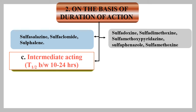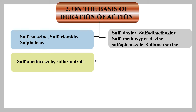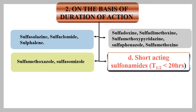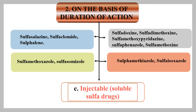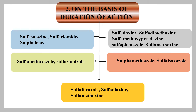Intermediate acting sulfonamides have a half-life between 10 to 24 hours; examples are sulfamethoxazole and sulfasomizole. Short acting sulfonamides have a half-life less than 20 hours; examples include sulfamethizole and sulfisoxazole. Injectable or soluble sulfonamides include sulfafurazole, sulfadiazine, and sulfamethoxine.